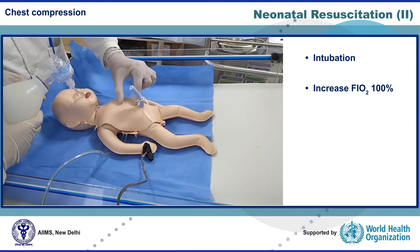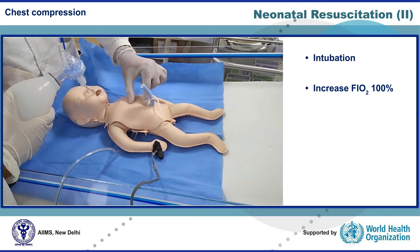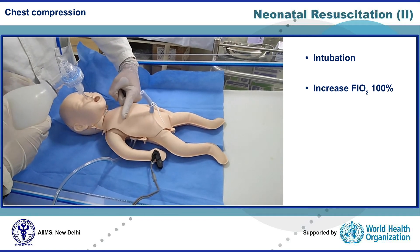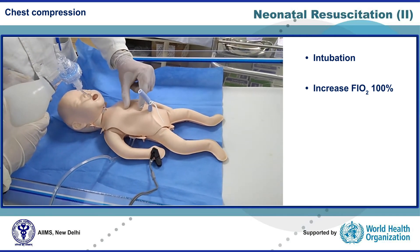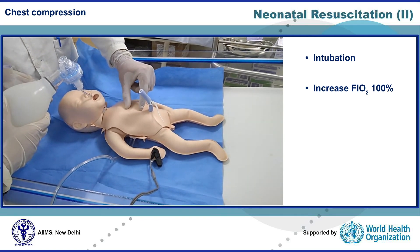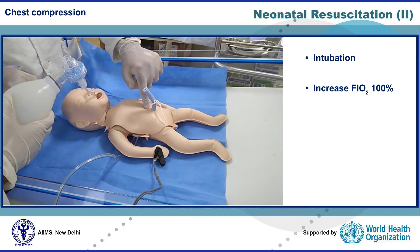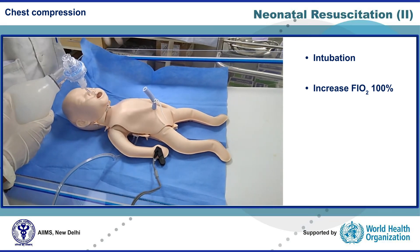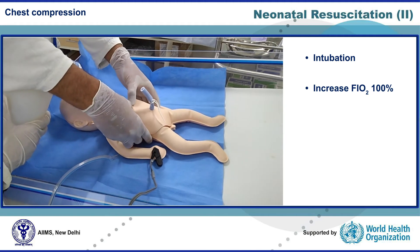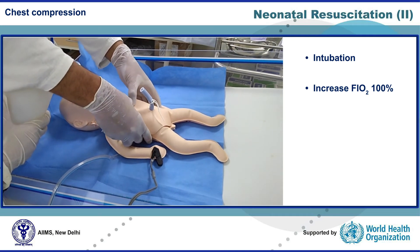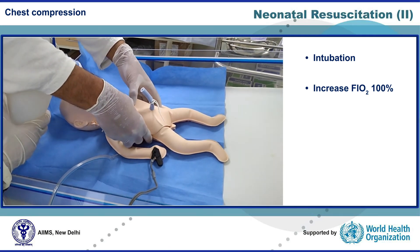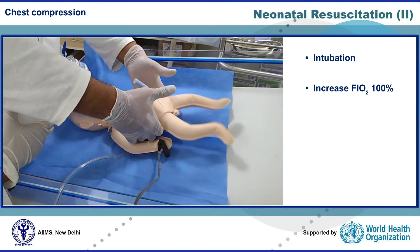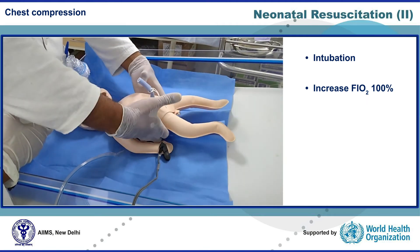The location of chest compression is the lower half of the sternum. You can draw an imaginary inter-nipple line and start chest compression below that line in the midline, taking care not to press on the xiphisternum. The recommended technique is the two-thumbs technique, where two thumbs are used to perform compression while the fingers support the back from behind.